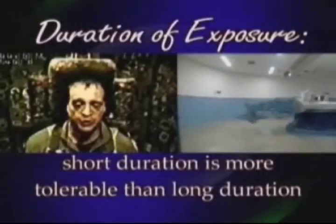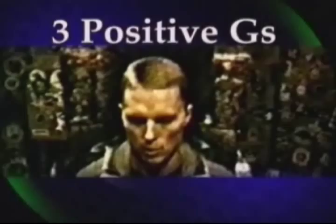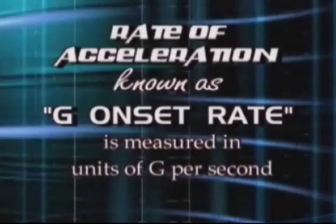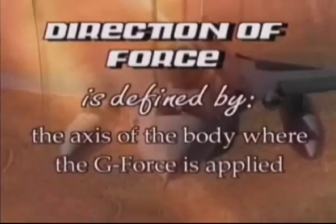Duration of exposure is how long a person has been exposed to a G-force; short duration is more tolerable than long duration. Experiencing three positive vertical Gs for several seconds is not difficult for the average individual, but enduring it for over 15 seconds becomes physically challenging. Rate of acceleration, known as the G-onset rate, is measured in units of G per second. A slow or gradual G-onset rate is more tolerable than a high one. Direction of force is defined by the axis of the body where the G-force is applied, which determines the G-type.